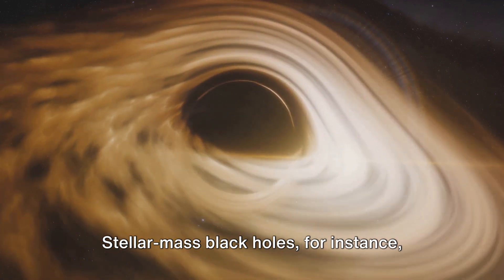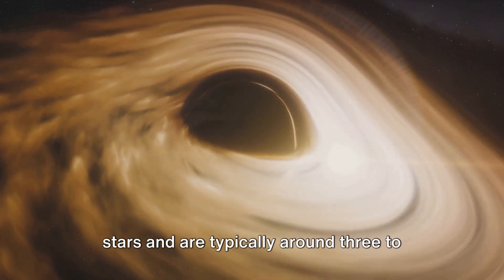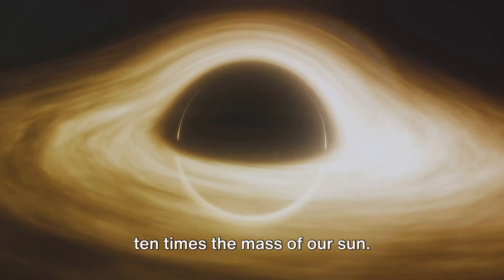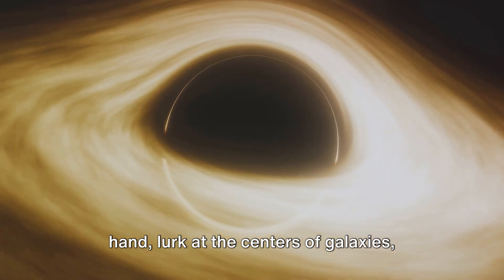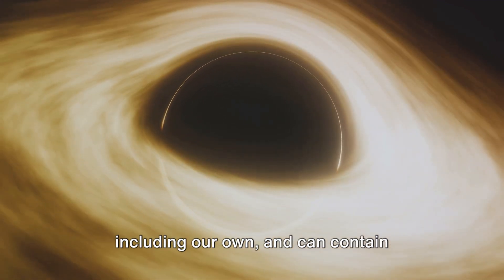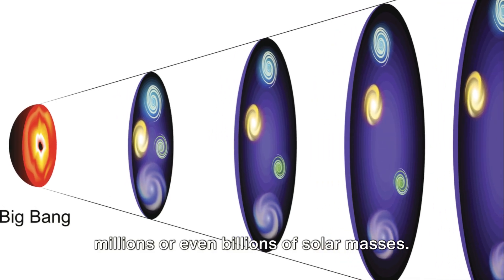Stellar mass black holes, for instance, are formed by the collapse of massive stars and are typically around three to ten times the mass of our sun. Supermassive black holes, on the other hand, lurk at the centers of galaxies, including our own, and can contain millions or even billions of solar masses.